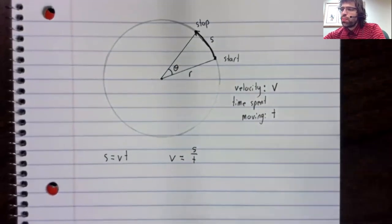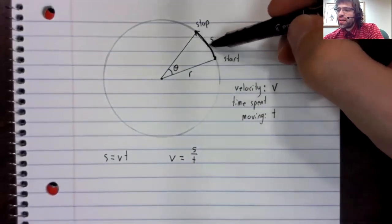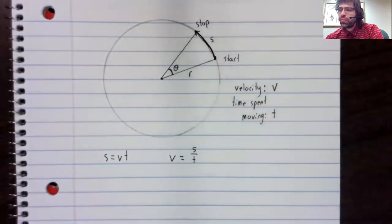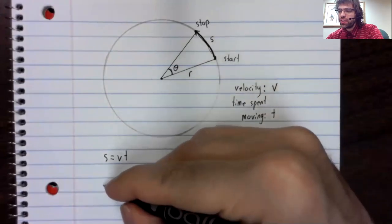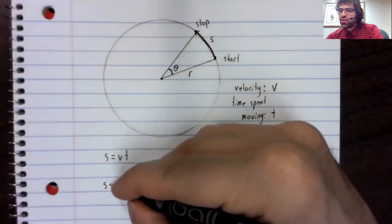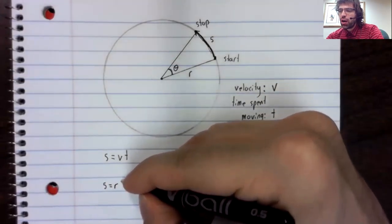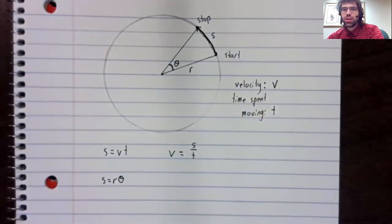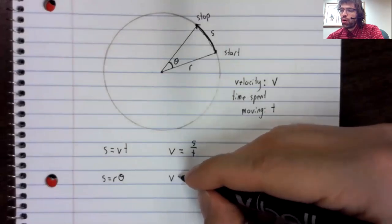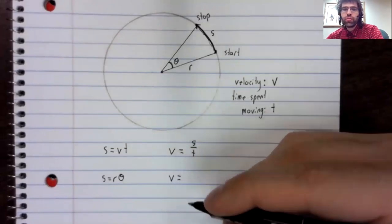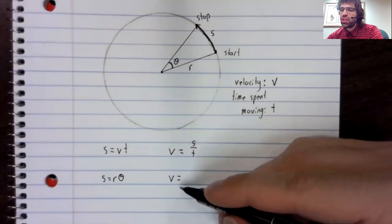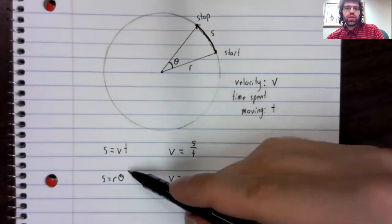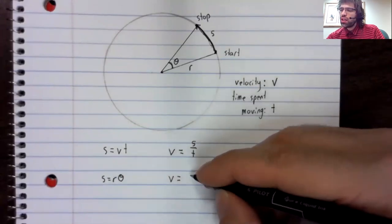However, we've seen that S, R, and theta are related: S equals R times theta. So if we want, we can take this formula for velocity, and where S appears, we can write R theta.